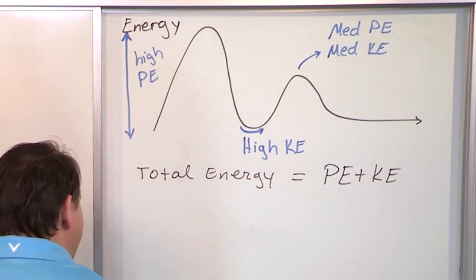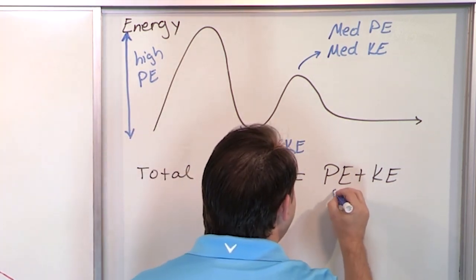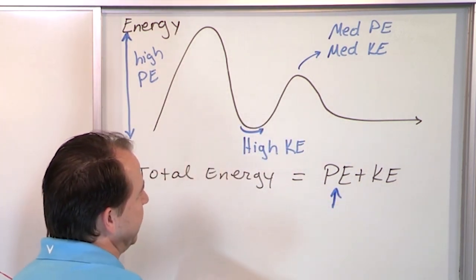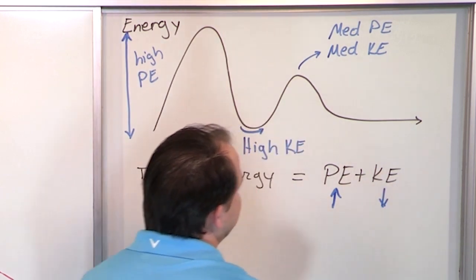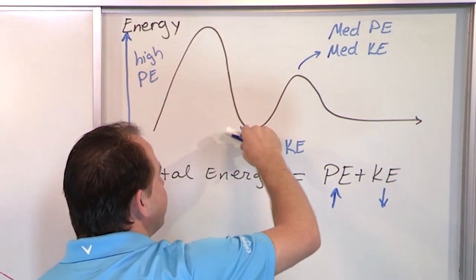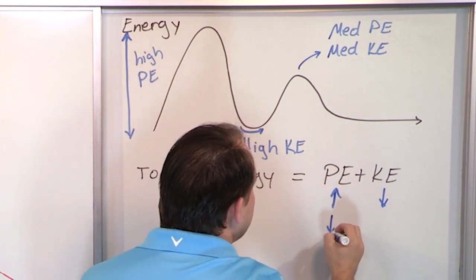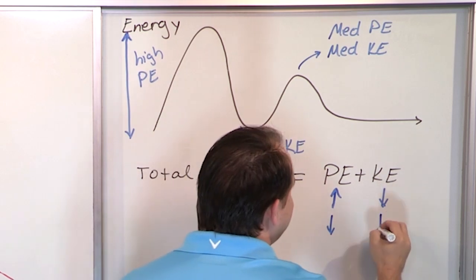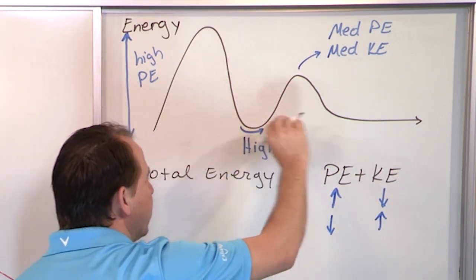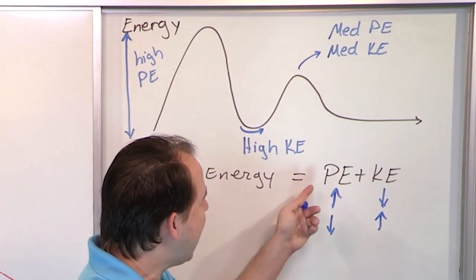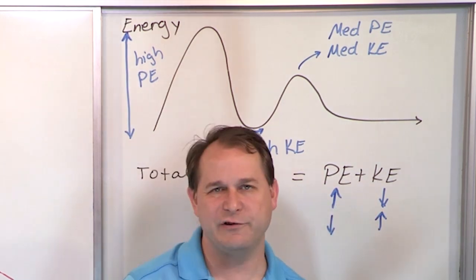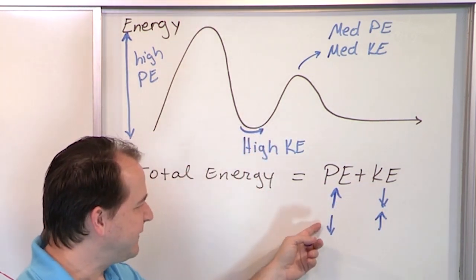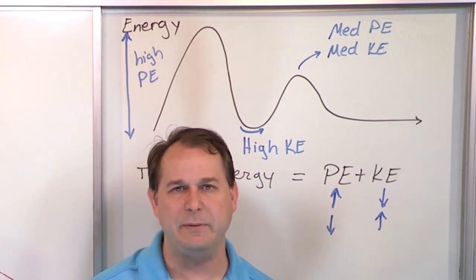So at the very top of the hill, I have a very high potential energy. That's what the up arrow means. And I have a very low kinetic energy up at the top here. But then when I get to the bottom here, I have a very low potential energy because I'm basically at ground level. And I have a very high kinetic energy because I'm going really fast. So you see what's happening? Every time the potential energy gets high, my kinetic energy must get low. And every time the potential energy gets low, the kinetic energy must be high.